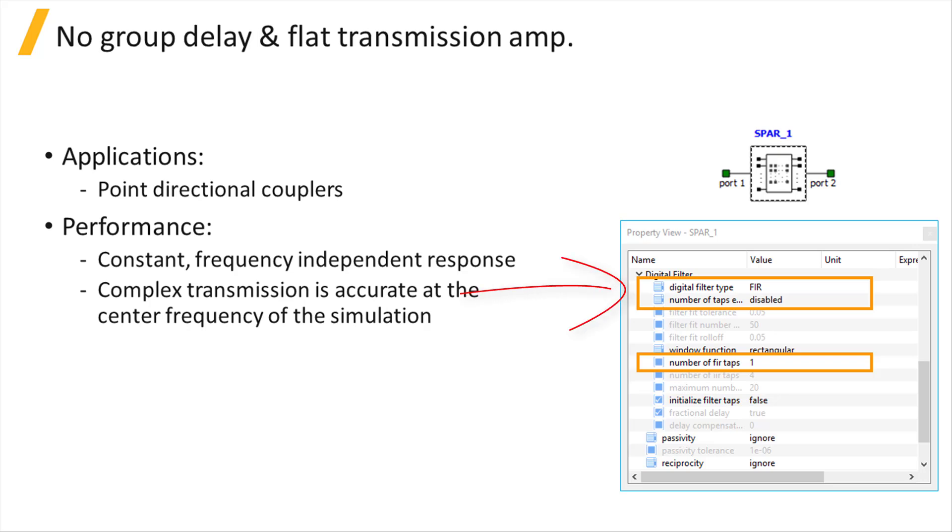Set the digital filter type to FIR, the number of taps estimation to disabled, and the number of FIR taps to 1. This element has a constant, frequency-independent response with zero group delay. The complex transmission is accurate at the center frequency of the simulation.